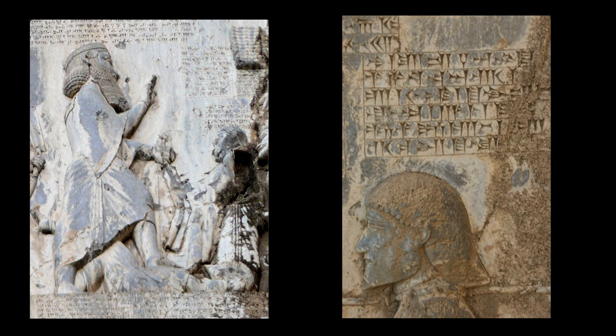Sections 63–64: "King Darius says: On this account Ahura Mazda brought me help, and all the other gods, all that there are, because I was not wicked, nor was I a liar, nor was I a despot — neither I nor any of my family. I have ruled according to righteousness. Neither to the weak nor to the powerful did I do wrong. You who may be king hereafter: whosoever shall be a liar or a rebel, or shall not be friendly, punish him."